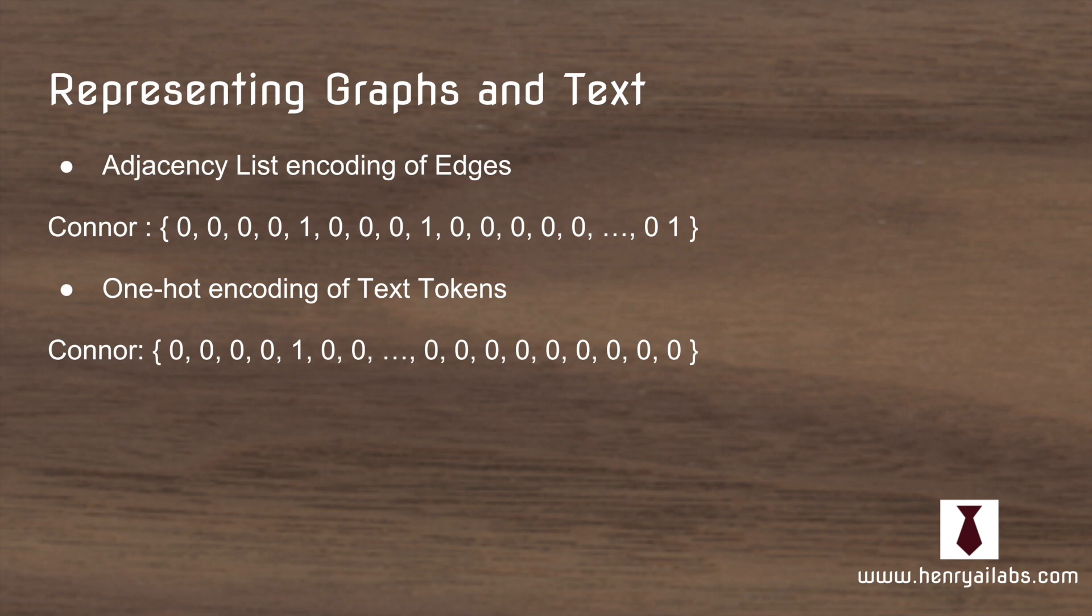So graph data and text are actually represented very similarly. And the adjacency list encoding edges and a one-hot encoding of text tokens have a very similar structure and very similar sparsity.